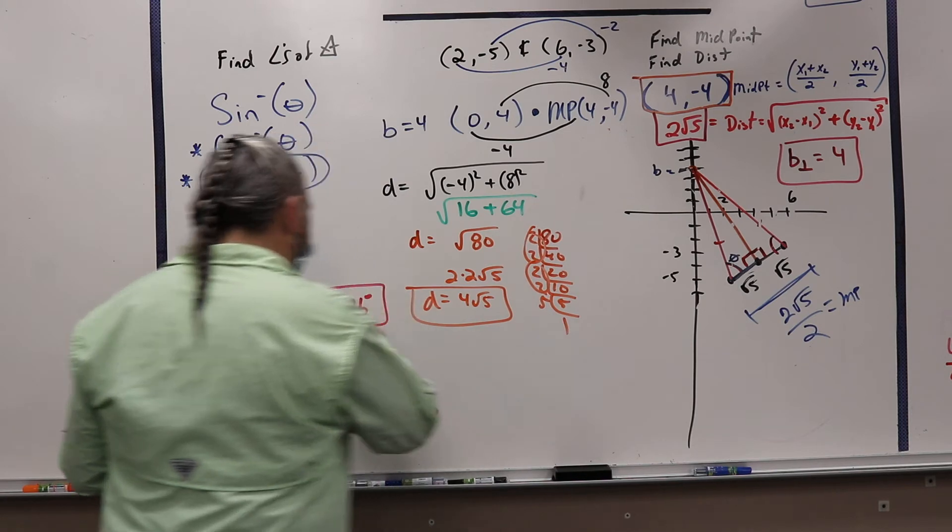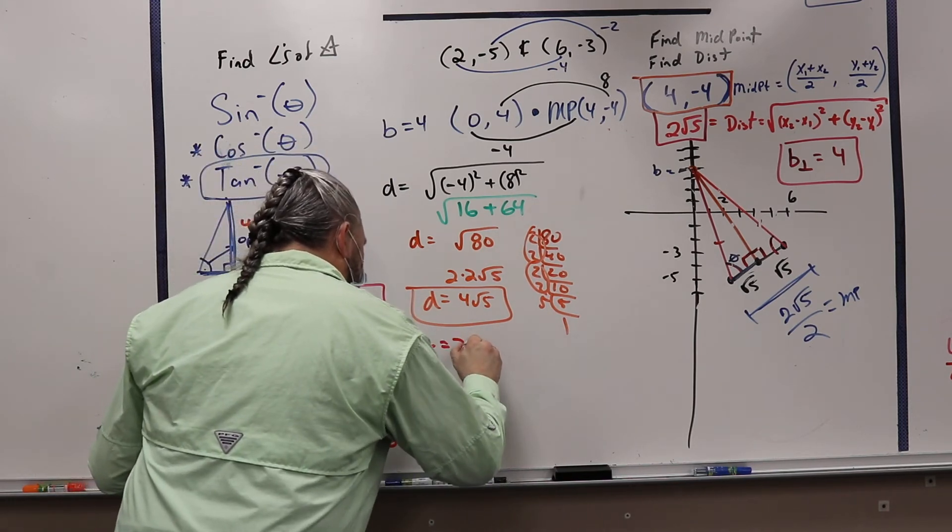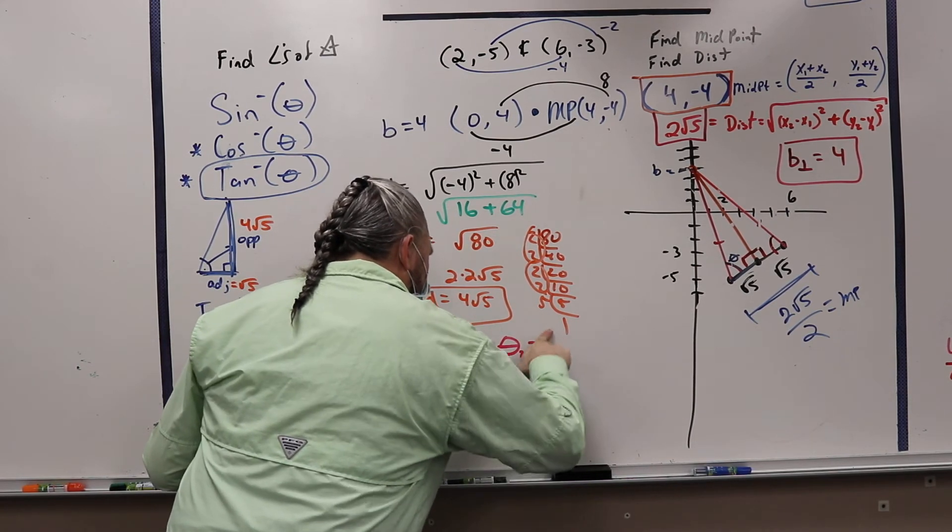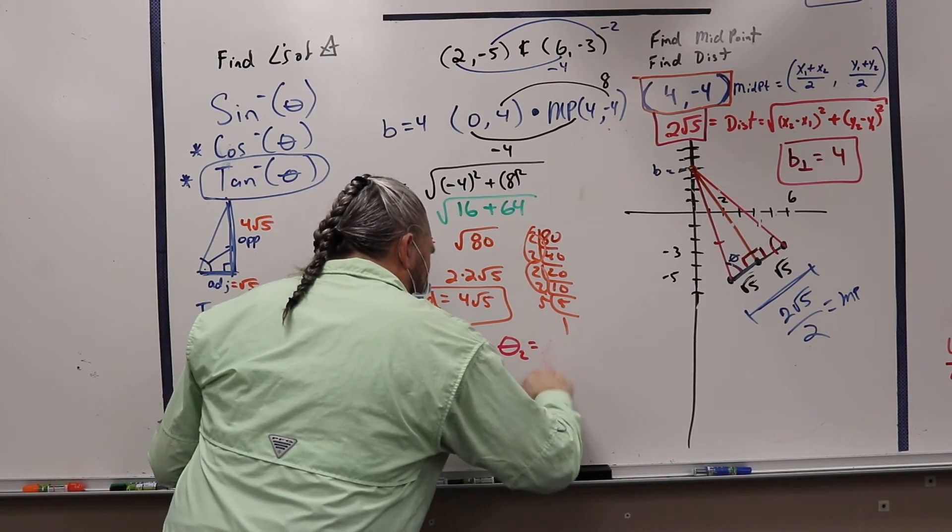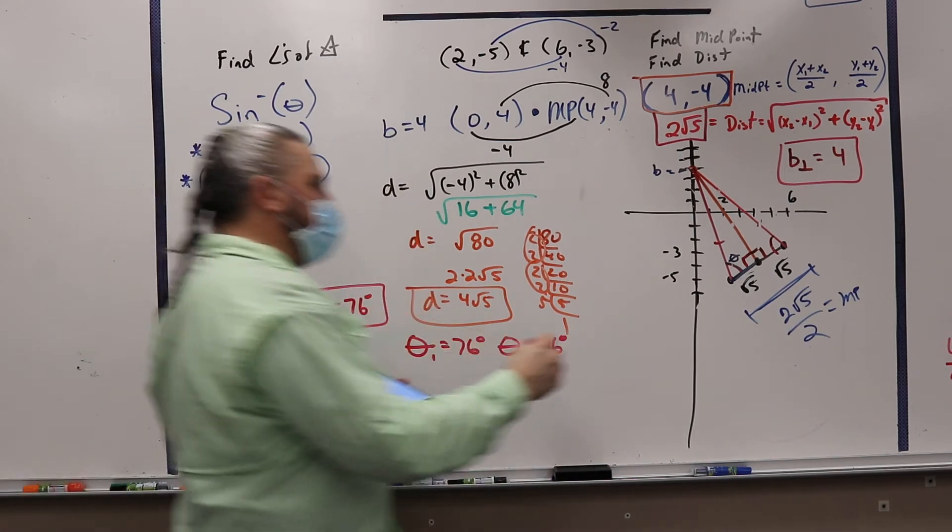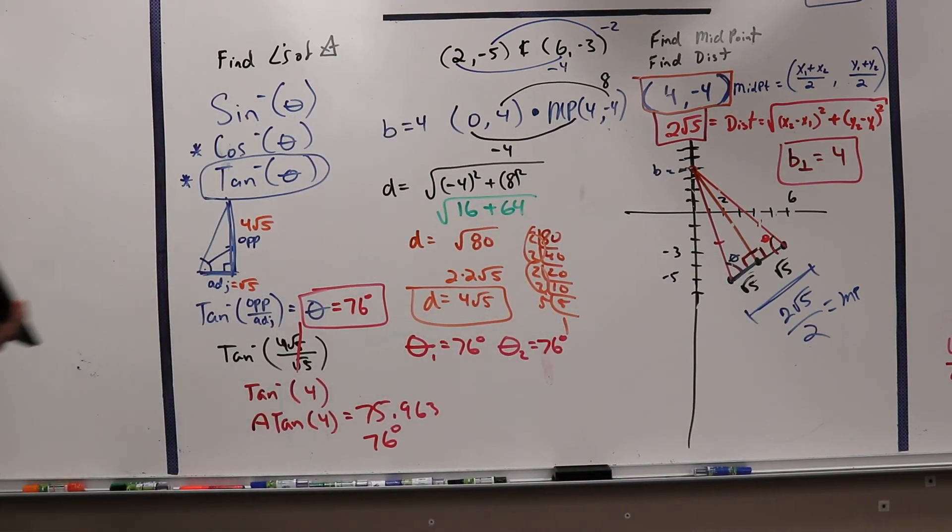One theta is going to be, theta number one will be 76 degrees. Theta number two will be 76 degrees, right? Because theta here and theta here, right? But then we've got another angle.